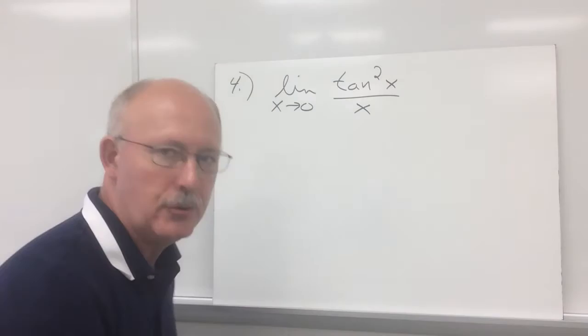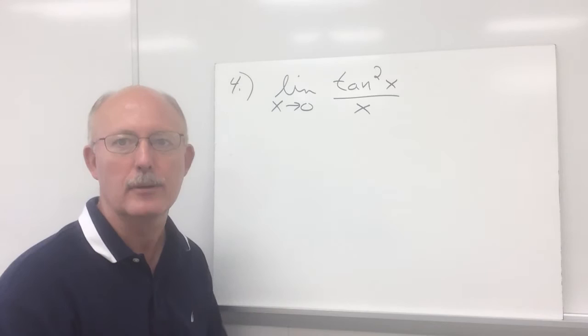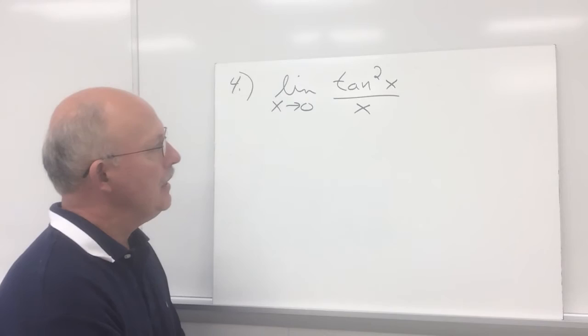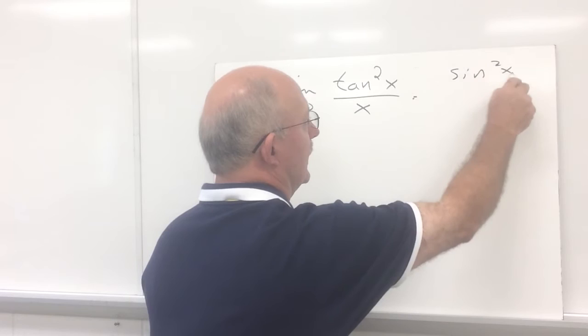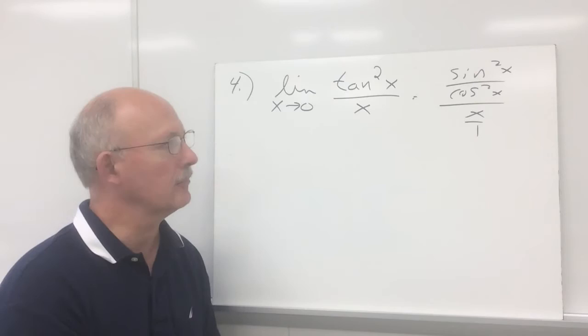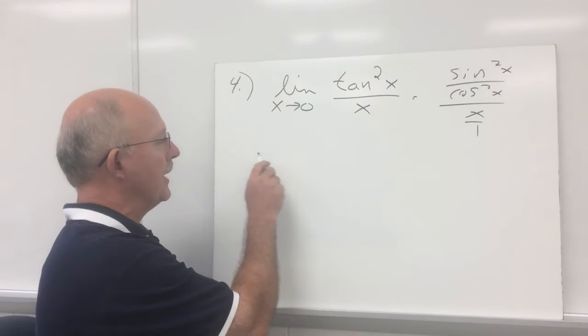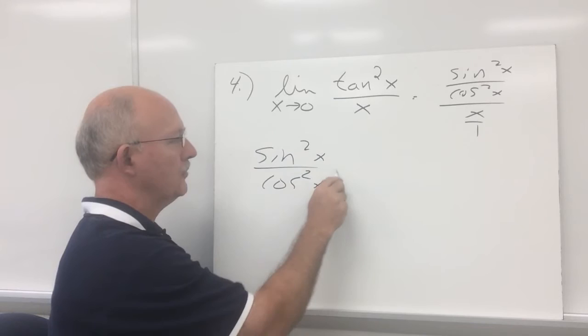Let's try problem number 4. We've got tangent squared x over x. To evaluate this, we're going to get sin x over x in there somewhere. We'll rewrite tangent squared x as sin squared x over cosine squared x, all over x. I'm going to rewrite the x as x over 1, so we have one fraction divided by another fraction: sin squared x over cosine squared x divided by x over 1. Taking the top fraction and multiplying by the reciprocal of the bottom gives us sin squared x over cosine squared x times 1 over x.